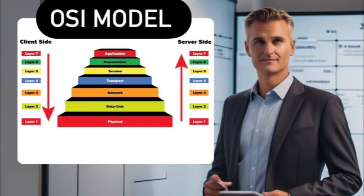The OSI model is a framework consisting of seven layers. Each layer has a specific function and behavior within a network. There are different levels, from the most tangible and physical to the more abstract and user-oriented. To remember all seven layers, I use a mnemonic: 'Please do not transport salty pigs to America,' where each word corresponds to Physical, Data link, Network, Transport, Session, Presentation, and Application layers.